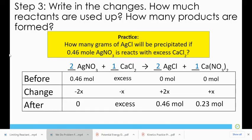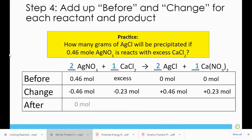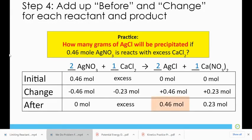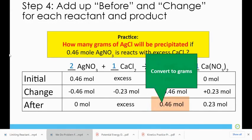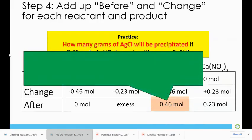Now that's all that's left is I take moles of silver chloride and change it to grams of silver chloride. Using the molar mass from the periodic table of the elements.